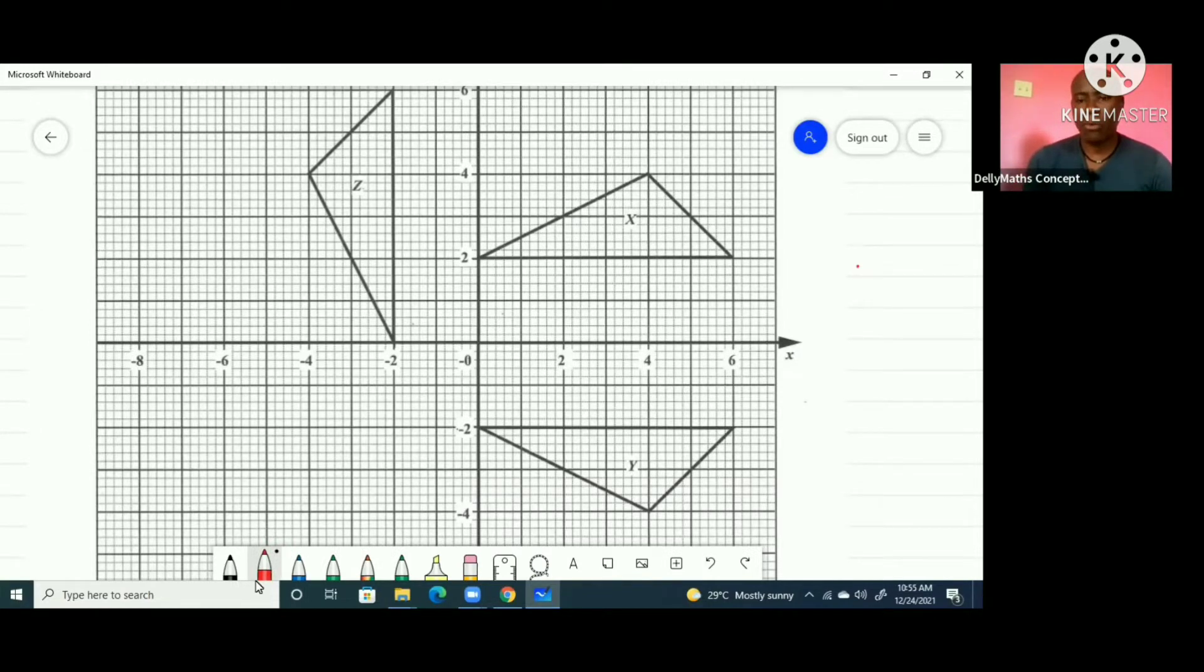Looking at X and looking at Y, we know that this is the object here and this is the image. When we're dealing with a reflection, we understand that the object and the image will be equal in distances from the mirror line. If you look at this, you're seeing that this line here would be the center, so this is the mirror line because these points are equal in distances.